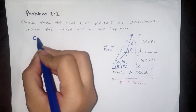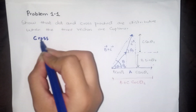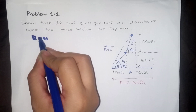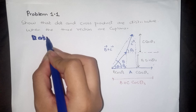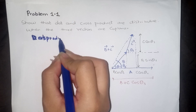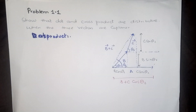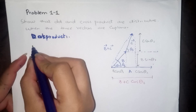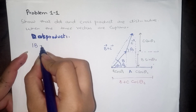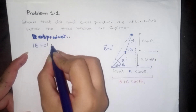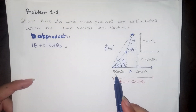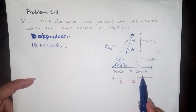Now we have to explain the dot product first. For the dot product, we have to show that B plus C cos theta 3 is equal to B cos theta 1 plus C cos theta 2.